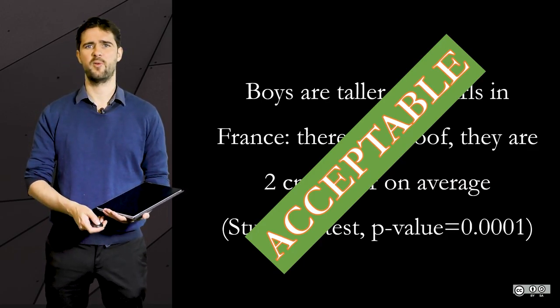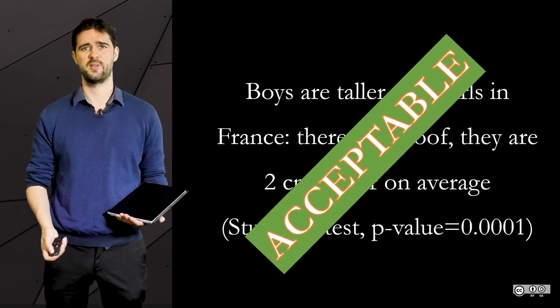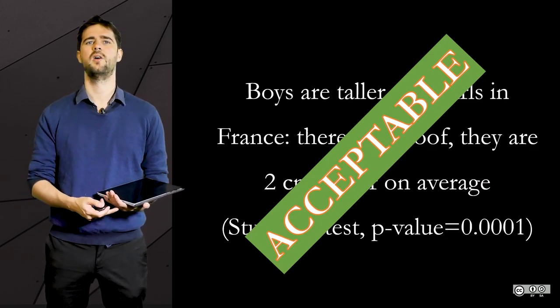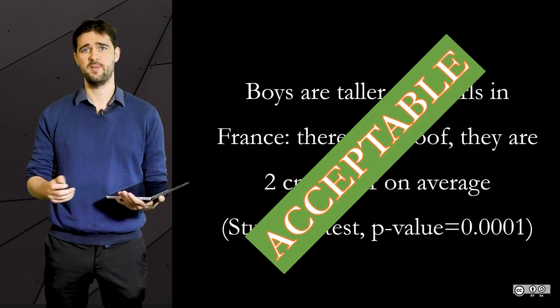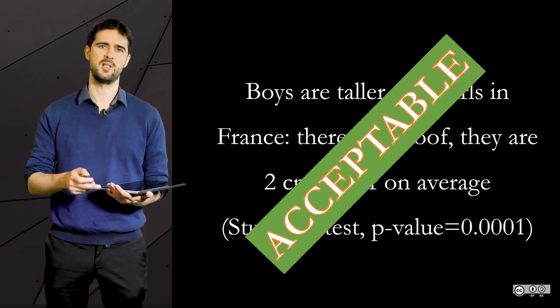There are lengthy debates over the relevance of the threshold of 5%, but we will not dwell on the matter here. Just remember that there is an indicator, the p-value, and that the threshold is usually 0.05.